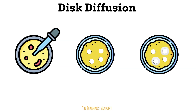After incubation, clear areas around the antibiotic disc mean bacteria didn't grow there — also known as the zone of inhibition. This area is measured and the values are compared to Clinical and Laboratory Standards Institute (CLSI)-established guidelines to classify the bacteria as either susceptible, meaning the antibiotic is likely to be effective; intermediate, meaning the antibiotic may work at higher doses or in specific body sites; or resistant, meaning the antibiotic is unlikely to be effective.